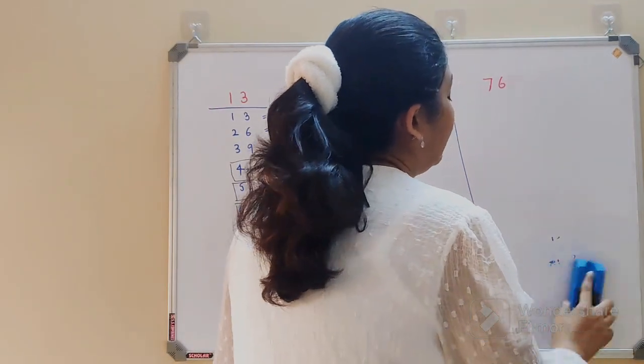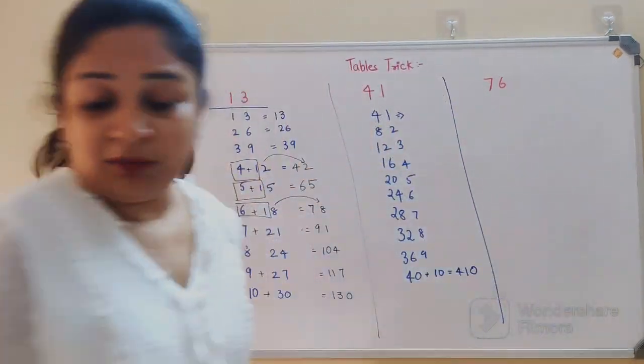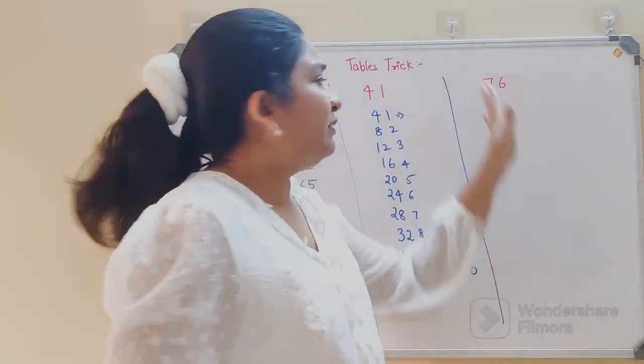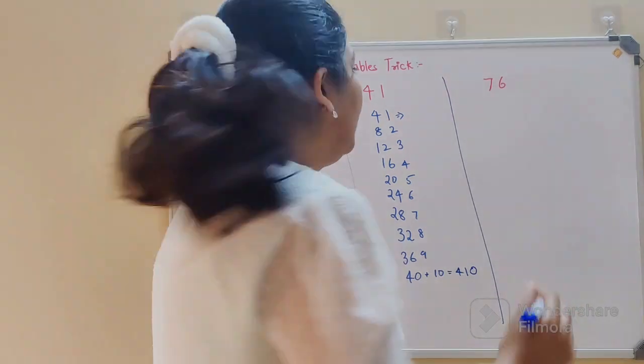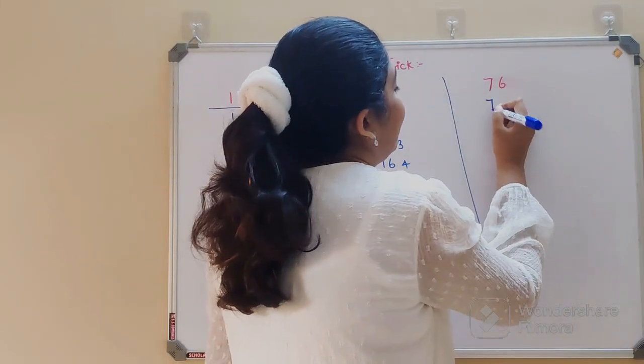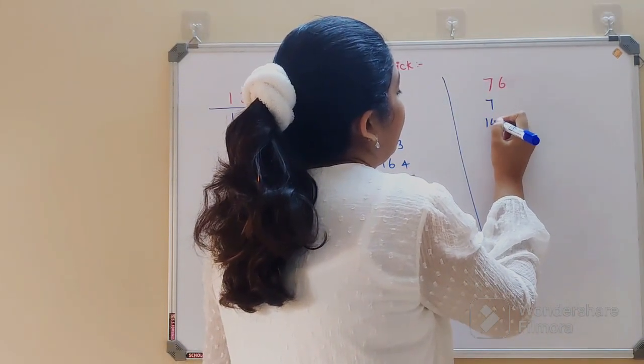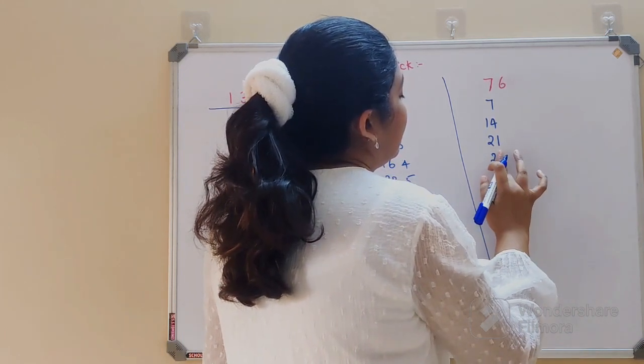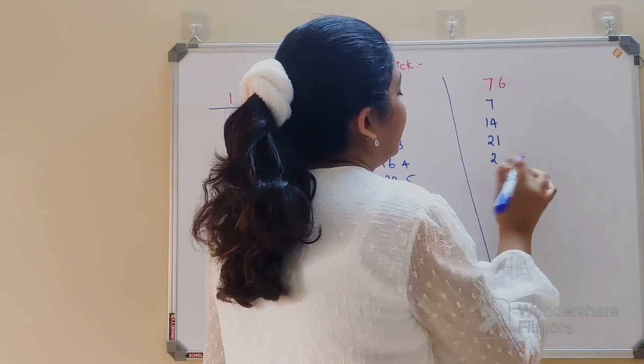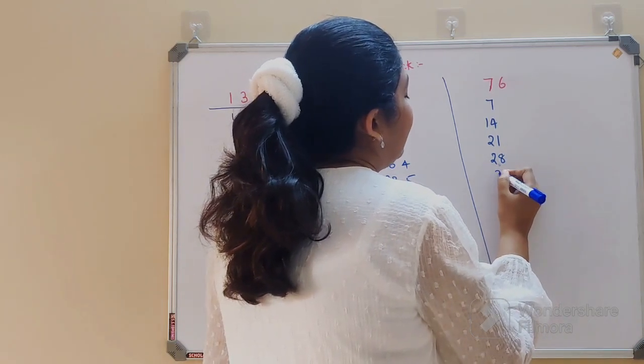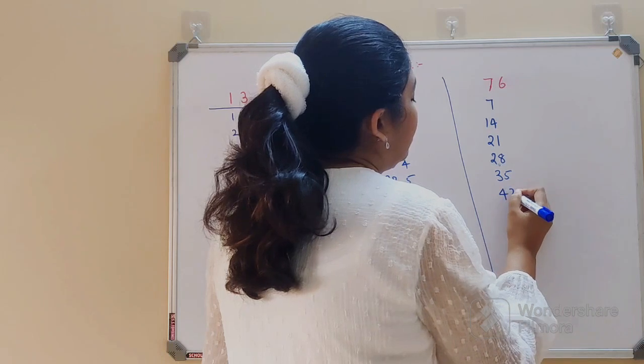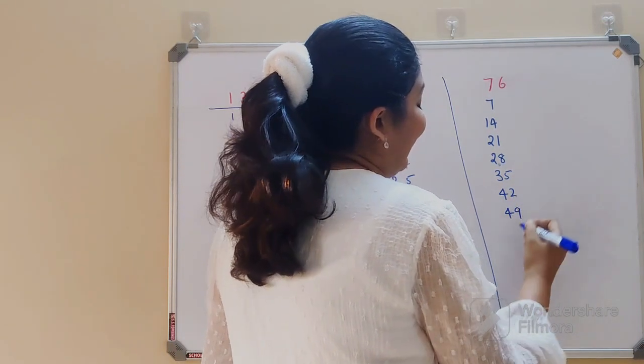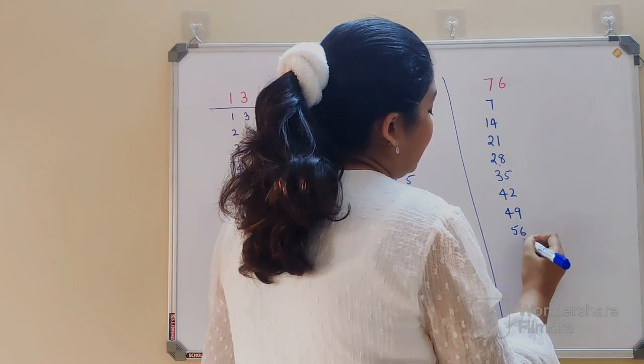So now we're going to pick up a harder one. In this case, again we write down 7's table and then we write down 6's table. So again, 7 ones are 7, 7 twos are 14, 7 threes are 21, 7 fours are 28, 7 fives are 35.